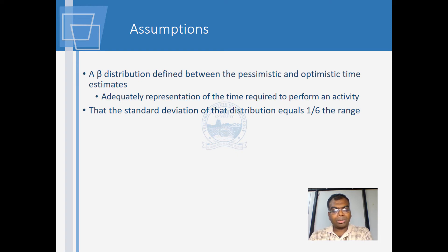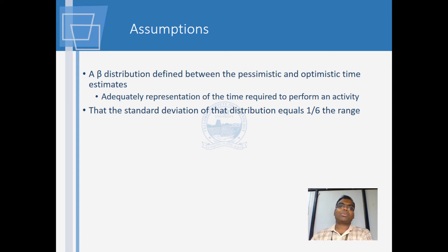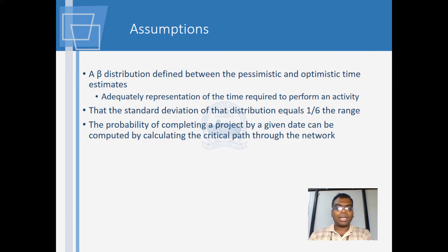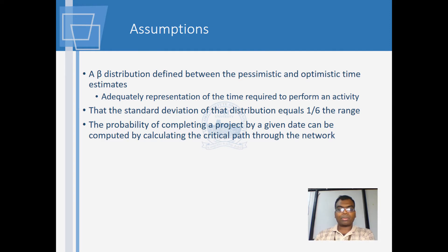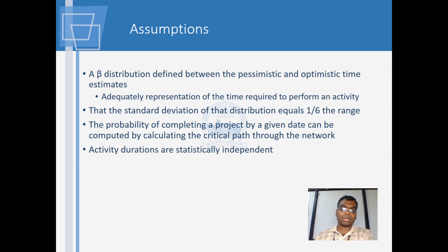The distribution equals one-sixth of the range — it is a weighted average. Four times the weight is given to the most likely time, and a weight of one is given to each of the extremities. The probability of completing a project uses the same forward pass and backward pass as the critical path method, the only difference being that dates are probabilistic here rather than deterministic as in CPM.